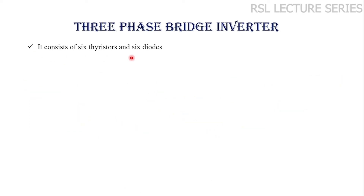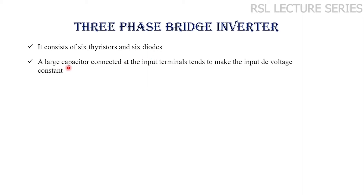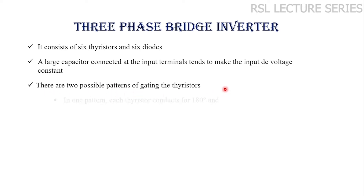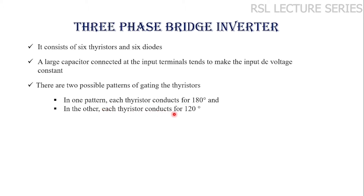It consists of six thyristors and six diodes. A large capacitor is mainly provided at the input terminals to make the input DC voltage a constant value. There are two possible patterns of thyristor conduction. In one pattern each thyristor conducts for 180 degrees, also called the 180 degree mode of conduction. In another pattern each thyristor conducts for 120 degrees, called the 120 degree mode of conduction. First we will see the three phase 180 degree mode voltage source inverter.